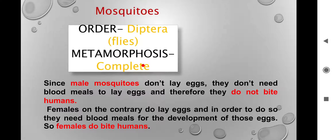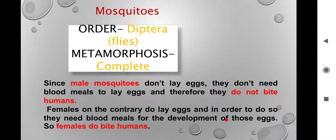Before going to the life cycle, I want to clarify that we have male mosquito and female mosquito — there is a clear sexual dimorphism. You might be curious whether it is a male or a female biting you. Male mosquitoes don't lay eggs and that's why they don't need blood meals — that is the reason they never bite. Females, on the contrary, lay eggs and need a blood meal for their development, so females do bite humans.